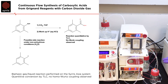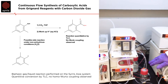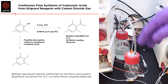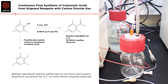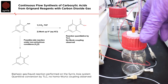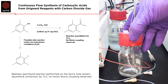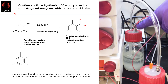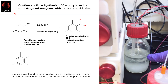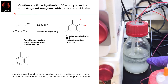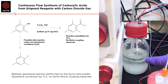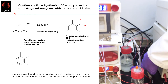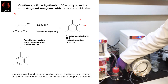Now one thing to note is as we're using carbon dioxide, we need to handle this carefully. So our output is going via our back pressure regulator into our acidic quench, which is coming out under a sealed condition into a scrubbing vessel with sodium hydroxide, and you can see the build up of our by-product carbon dioxide in the bottom.